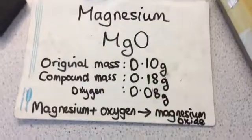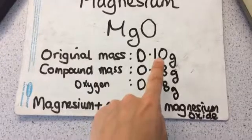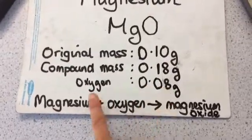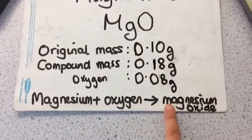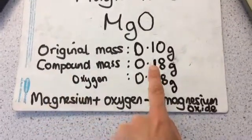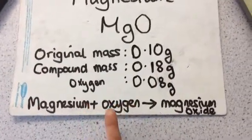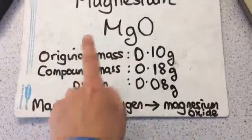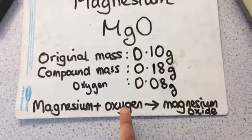So if I think about what's happening, I've got my magnesium, which has a mass of 0.1 grams and I've added 0.08 grams of oxygen to it. And therefore I have got a compound with a mass of 0.18 grams. So actually the mass hasn't increased, it just appears to increase. Because when we originally take the mass of the magnesium, we can't measure the mass of the oxygen because it's in the air.